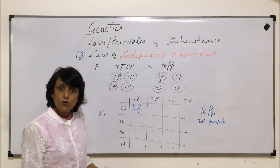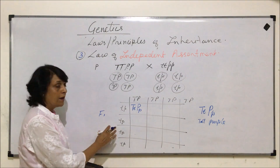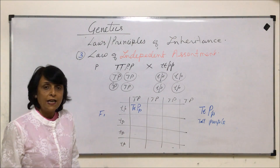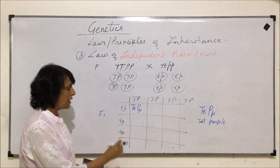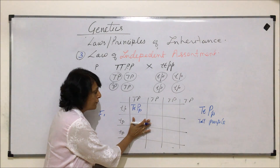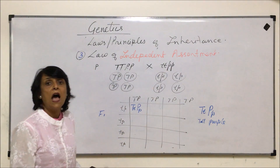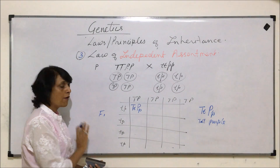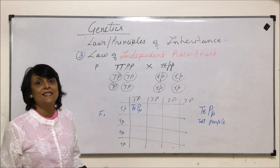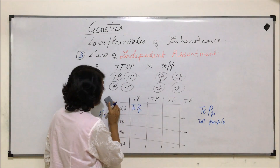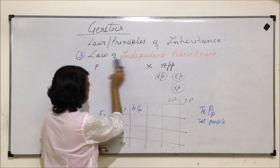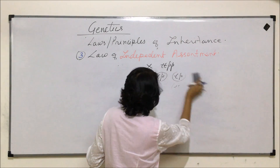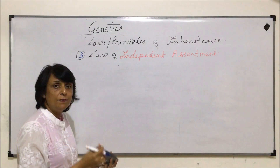Now if we perform selfing of the F1 generation — where offspring of the same generation are crossed — we will get the next generation, F2. Let us discuss F2 so that we can understand the law of independent assortment in a better manner.